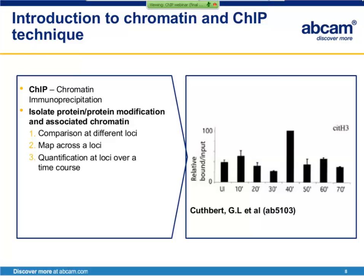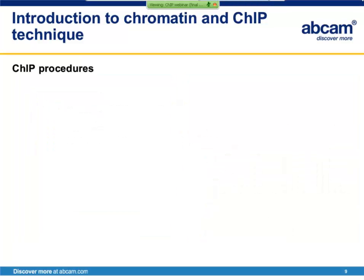Finally, ChIP can also allow you to quantify a protein or protein modification at genomic loci over a time course. In this example, citrullinated H3 is being analyzed at the inducible PS2 promoter. Cells are induced with estrogen and samples taken every 10 minutes. The cells from each time point are used for individual ChIP experiments with a specific antibody. The histone modification shows a cyclic presence at the promoter with highest levels of histone H3 citrullination at 40 minutes. There are two general procedures for performing ChIP experiments: native ChIP and cross-linking ChIP. The choice is dependent on your experimental aims and starting material.